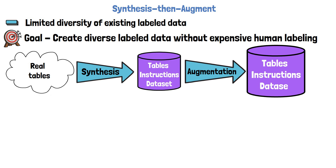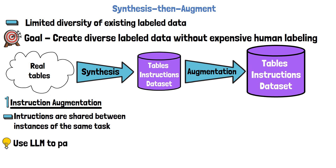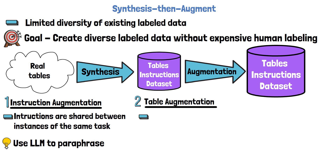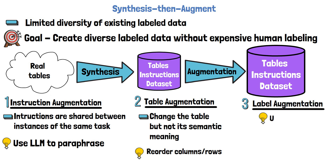After the synthesis step, there is already a diverse tables-instructions dataset. To create an even more diverse dataset, the second step is augmentation, with three types. First, instruction-level augmentation: since instructions are shared between instances of the same task, LLMs are used to paraphrase the manually crafted instructions to avoid overfitting. Second, table-level augmentation: more samples are created by reordering columns or rows without changing the table's semantic meaning. Third, label-level (ground truth) augmentation: a LLM is given the correct answer and asked to add reasoning for that answer.